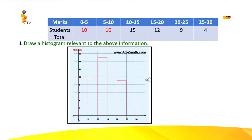There are 10 students between 0 and 5, 10 students between 5 and 10, 15 students between 10 and 15, 12 students between 15 and 20, 9 students between 20 and 25, and 4 students between 25 and 30. So this is the histogram that you have to draw.